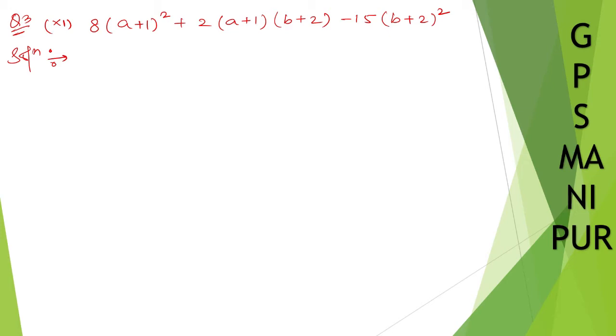So here, what can we do? 8(a+1)² plus 2(a+1)(b+2) and this one. So here you can do something different. That is, take (b+2) as constant. Take (b+2) as constant.